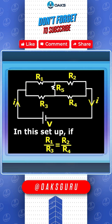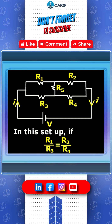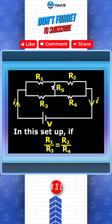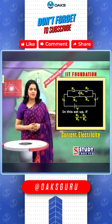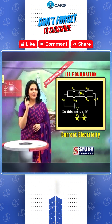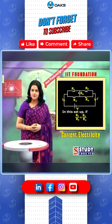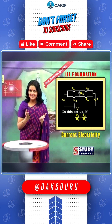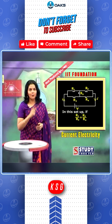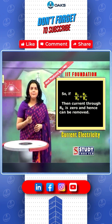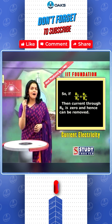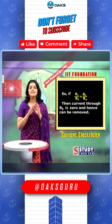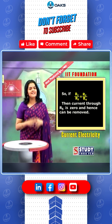In this setup, if R1 by R3 is equal to R2 by R4, the Wheatstone's Bridge is said to be balanced. Whenever this condition is satisfied, no current flows through the middle resistor R5. So, if R1 by R3 is equal to R2 by R4, then current through R5 is zero and hence R5 can be removed.